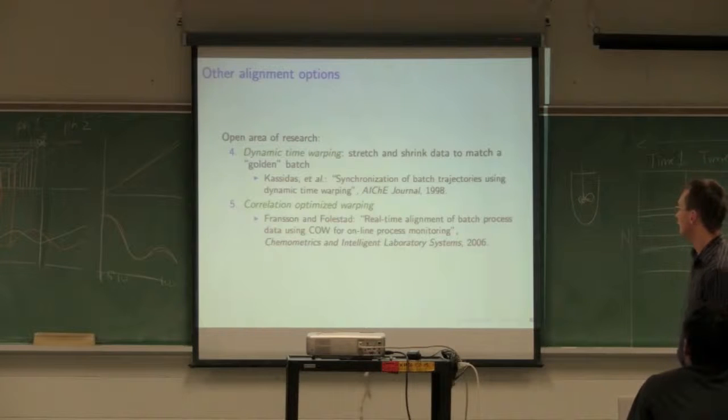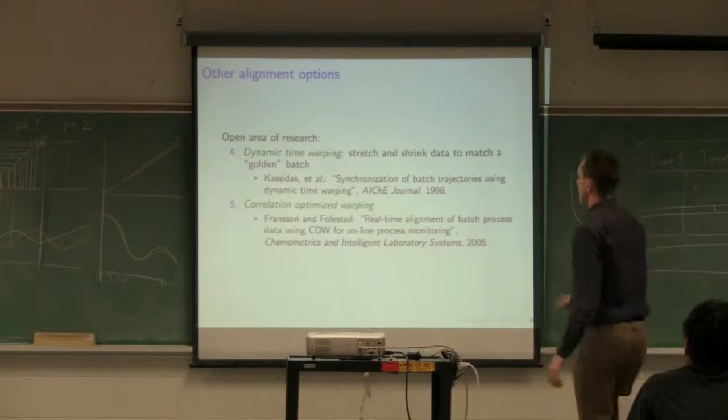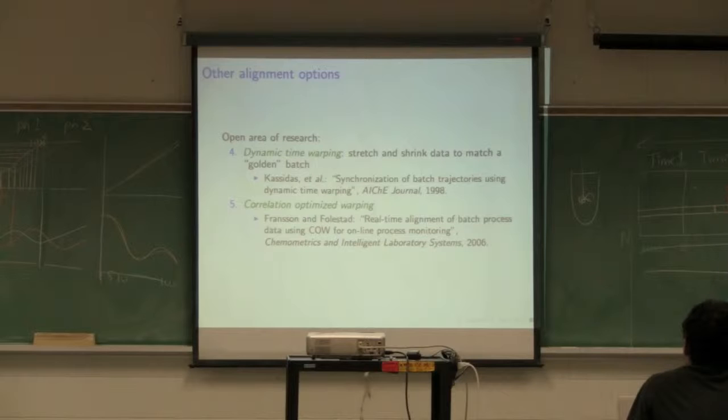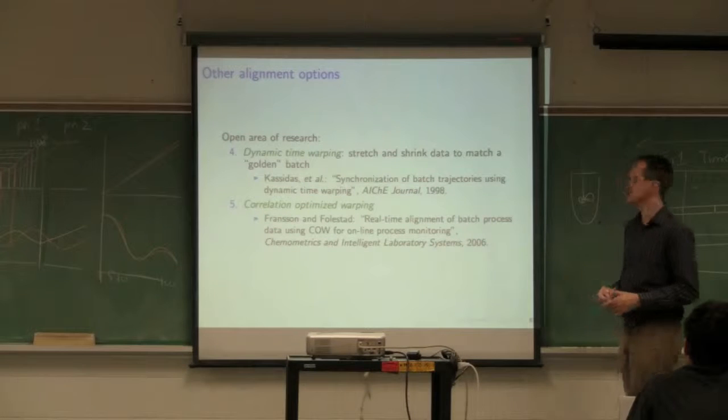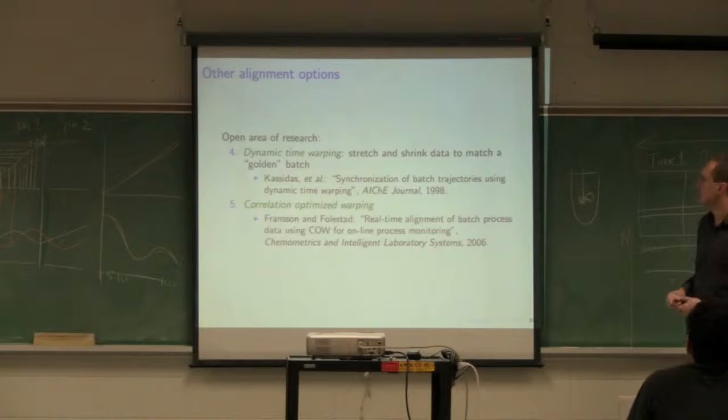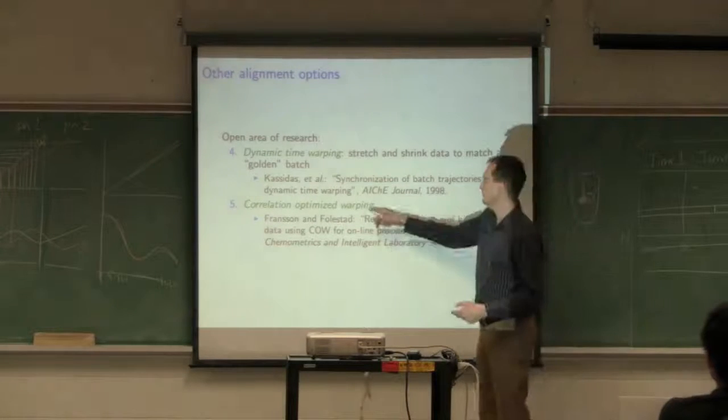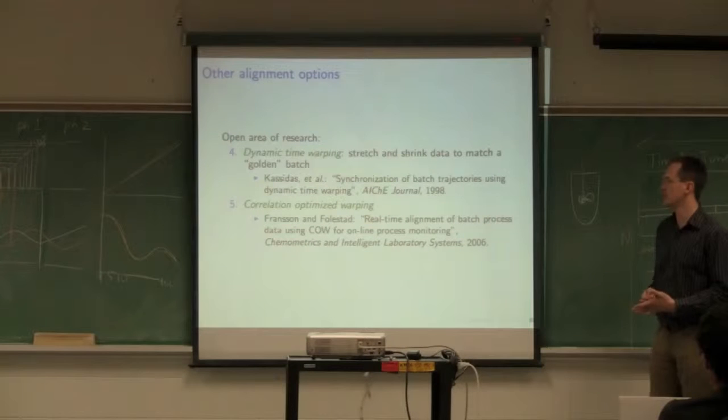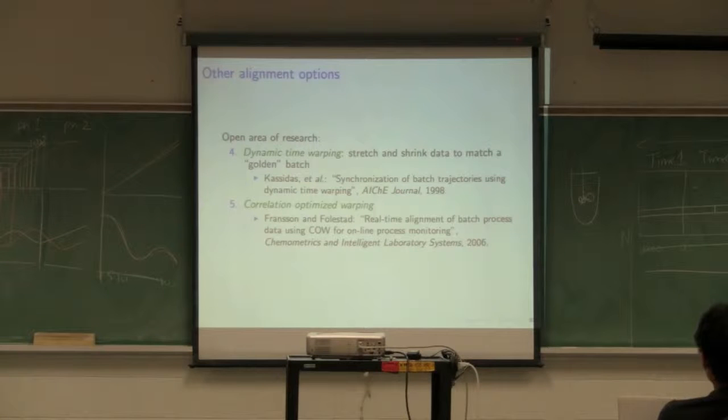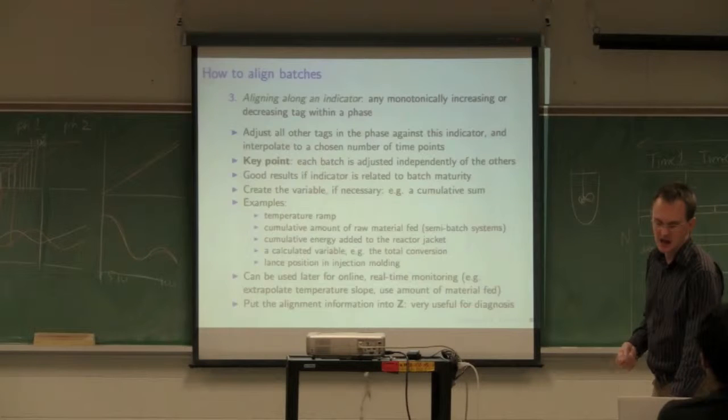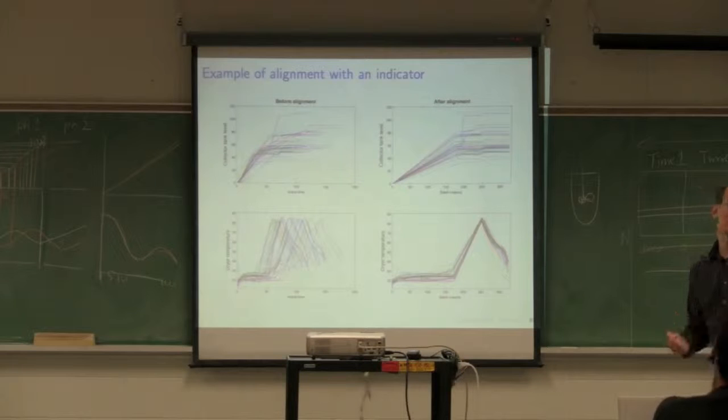The other two methods are fairly new. John MacGregor and Paul Taylor's work in 1998 on dynamic time warping uses an optimization-based approach to stretch and shrink data based on a reference batch or golden batch. Then there's correlation-optimized warping, a newish method recently being used and published. Some newer software packages offer that as an option. That paper talks about how to apply it in real time, which is the biggest problem with aligning data - how do we use it on future batches. We'll talk about that problem next class when we talk about process monitoring.